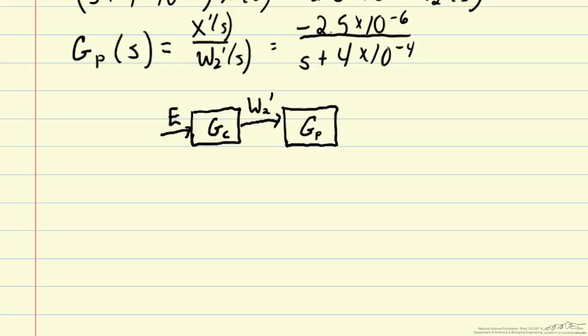So that's the input to our process, gp, and then the output is x prime, our mass fraction, and that's our control variable. So when we close the loop, we feed back our control variable x. And we calculate the error as the difference between our set point value for x, summation sign, and the actual value for x. So we have a plus sign on the set point, and then we subtract from it the actual measured value. So this gives us our feedback loop.